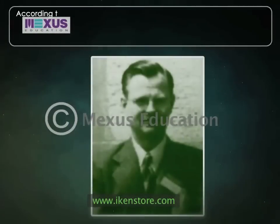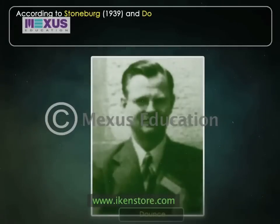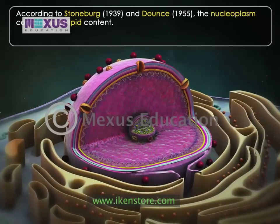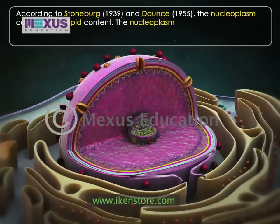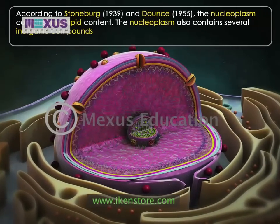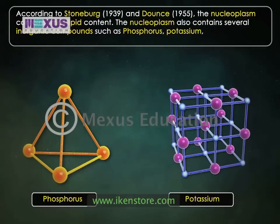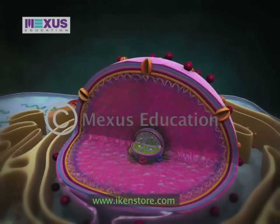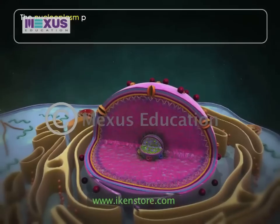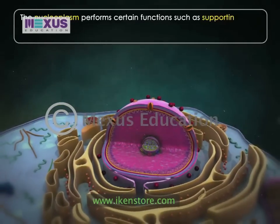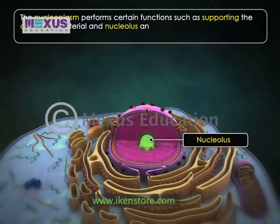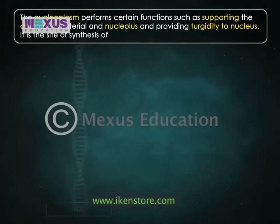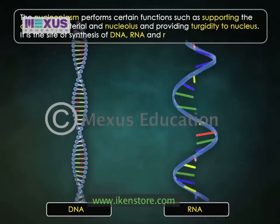According to Stoneberg (1939) and Downs (1955), the nucleoplasm contains small lipid content. The nucleoplasm also contains several inorganic compounds such as phosphorus, potassium, sodium, calcium, and magnesium. The nucleoplasm performs certain functions such as supporting the chromatin material and nucleolus and providing turgidity to the nucleus. It is the site of synthesis of DNA, RNA, and ribosomal subunits.